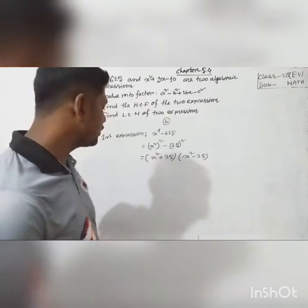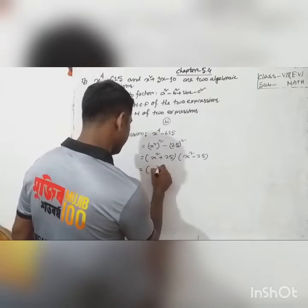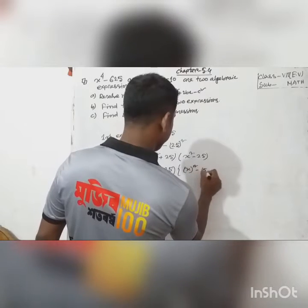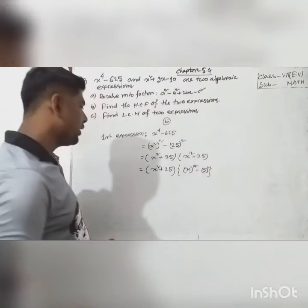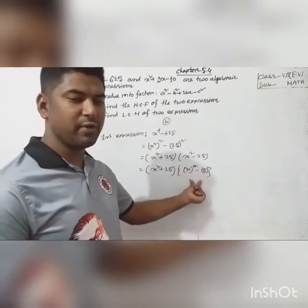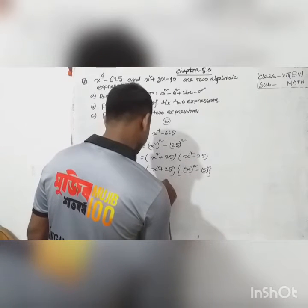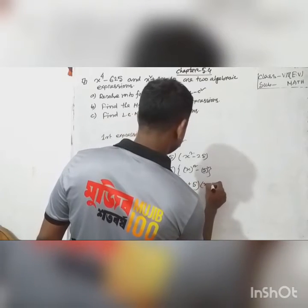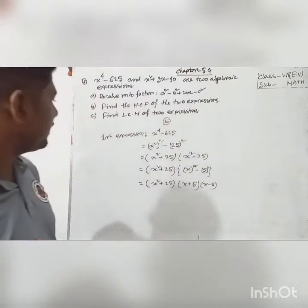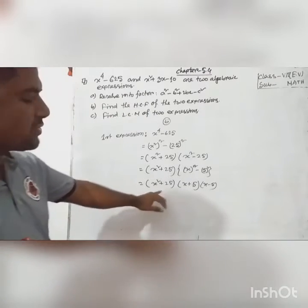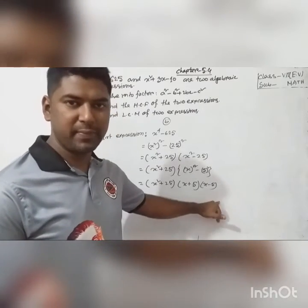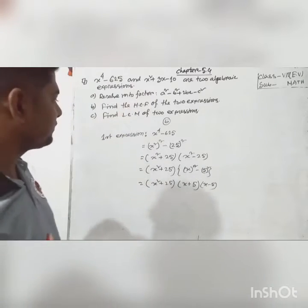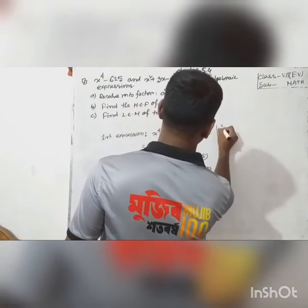Now look: (x² plus 25)(x² minus 25). We apply the a² minus b² formula again to x² minus 25, writing x² minus 5². So x² minus 25 becomes (x plus 5)(x minus 5). Therefore the first expression factors as (x² plus 25)(x plus 5)(x minus 5).